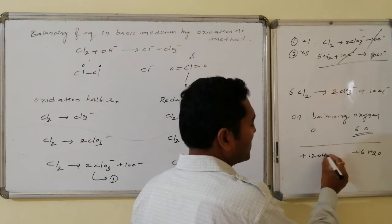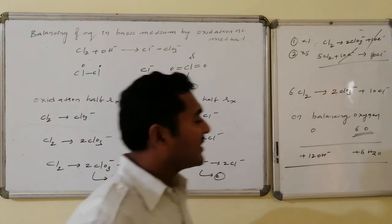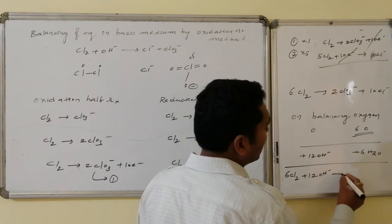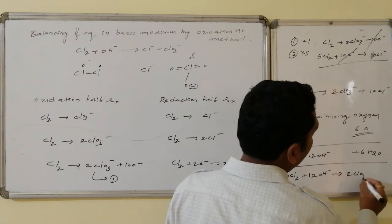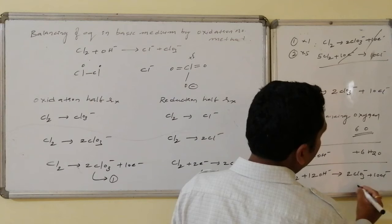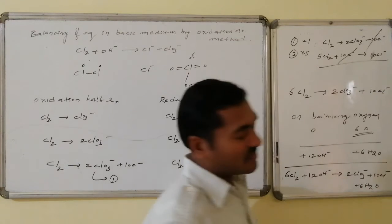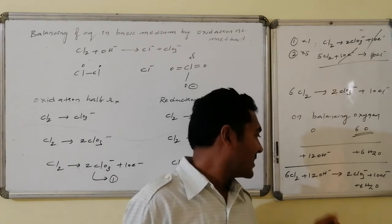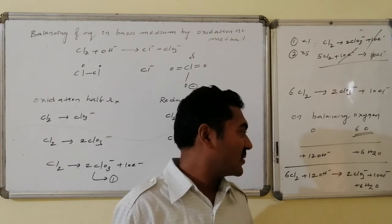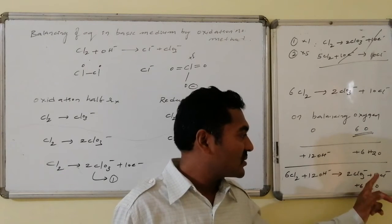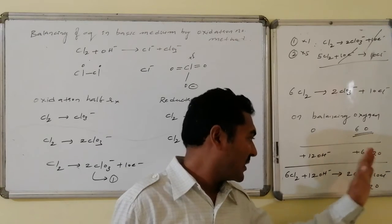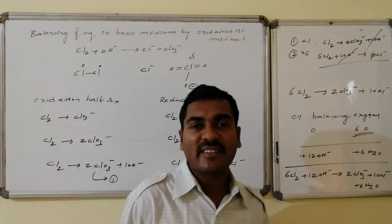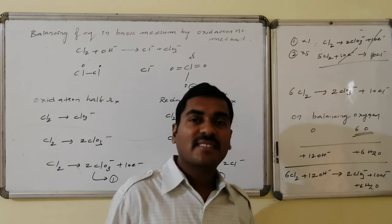The resulting equation is: 6Cl₂ + 12OH⁻ → 2ClO₃⁻ + 10Cl⁻ + 6H₂O. To verify, check the charge: on the left, 12 × (−1) = −12; on the right, 2 × (−1) + 10 × (−1) = −12. Since −12 equals −12, the equation is balanced in terms of central atoms, oxygens, and hydrogens.